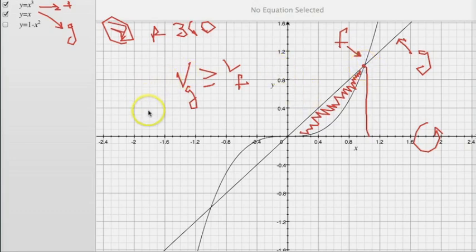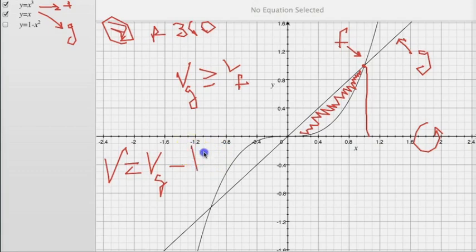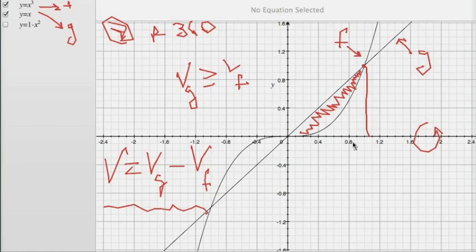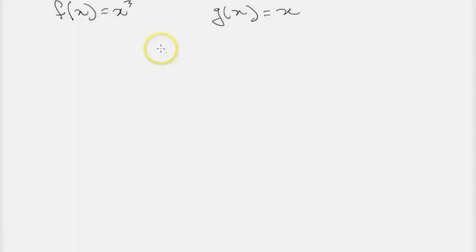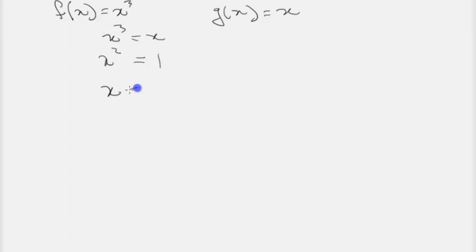In the same way we subtract one area from another when finding the area between two curves, we can do that when finding the volume generated by rotating the area between two curves — we have two volumes. We have the volume generated by rotating f about the x-axis and the volume from rotating g. The volume of g is always going to be greater than the volume of f since g is greater than f on this interval. We find the intersection by setting f and g equal: dividing by x gives x squared equals 1, so x equals 1 (using the positive value). Our region of integration is from 0 to 1.